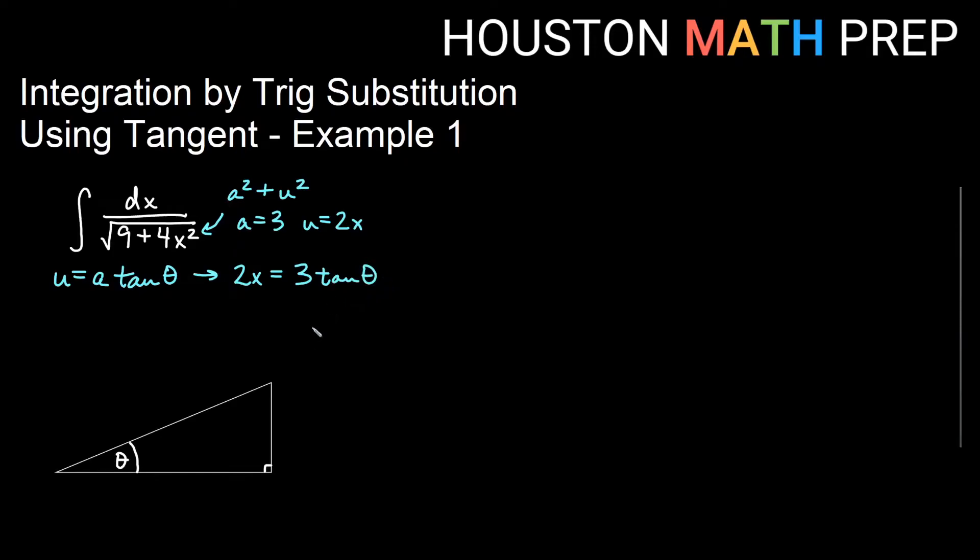There are a couple of ways we're going to need this. First, I need x equals 3 halves tangent theta because I need to figure out a substitution for dx. Solving for x makes that easier. Then dx equals 3 halves secant squared theta d theta.